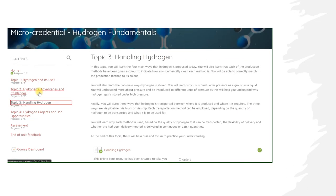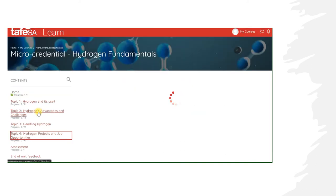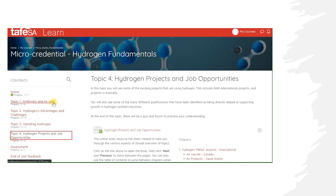Third, handling hydrogen, where you'll discover the four main ways in which hydrogen is produced. And finally, hydrogen projects and job opportunities, where you'll see some of the exciting Australian and international projects that are using hydrogen.